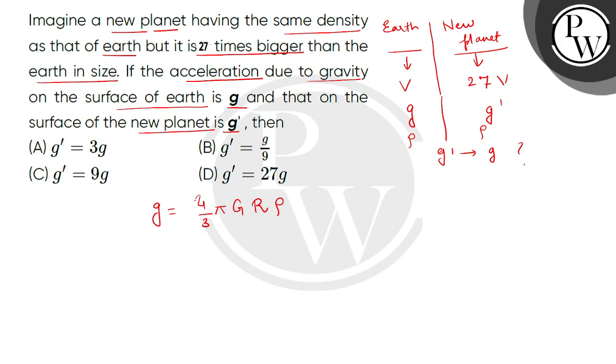So here we have 4 by 3, pi and G. These three are constant. Now the density is the same here. It is directly proportional to the radius.